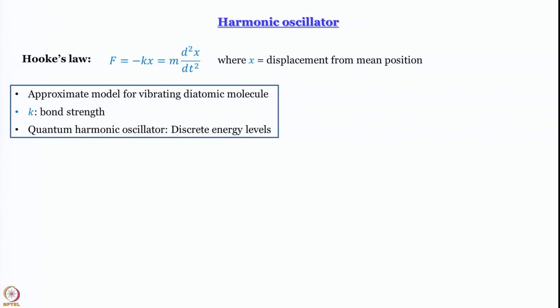If we can determine k quantum mechanically or spectroscopically, we get to know the bond strength, which is one of the most fundamentally important parameters of chemistry. When we try to talk about molecules, the classical description is not going to be complete and we have to discuss quantum harmonic oscillators. Going from the classical to the quantum regime, discrete energy levels come in, we talk about wave functions, and one more very interesting concept emerges.